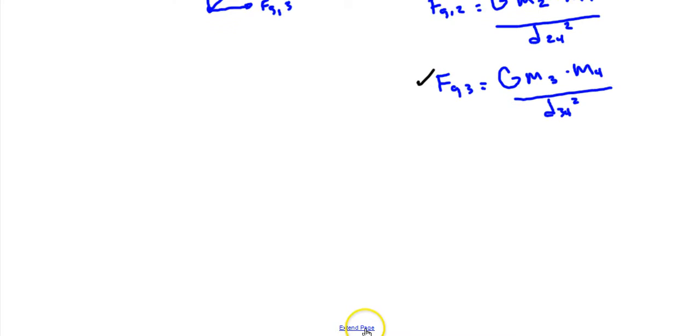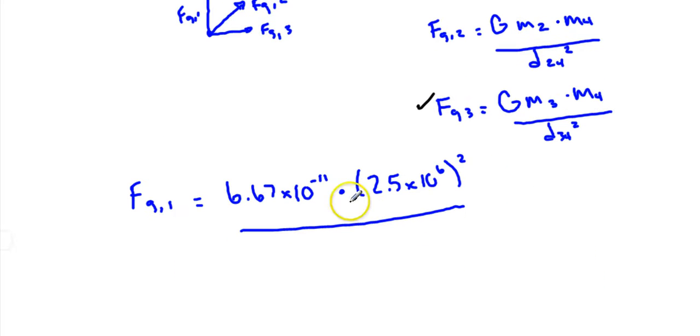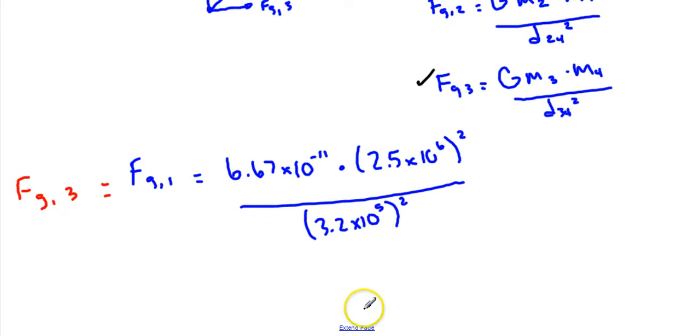So now we can plug some of these things in. We've got F_g1 is 6.67 times 10 to the negative 11th, multiplied by both of the masses multiplied together, which is really just the mass squared. So we've got 2.5 times 10 to the 6th squared, divided by the distance between them squared, but we have to be in meters, so we're in kilometers right now. So this is going to be 3.2 times 10 to the 5th meters squared. And this is also equal to F_g3, because they're the same distance away.